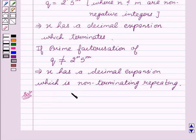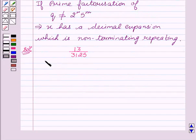Our given rational number is 13 upon 3125. So let x equal to 13 upon 3125.